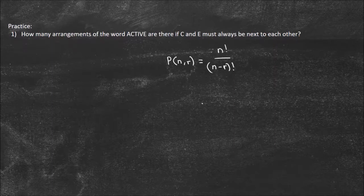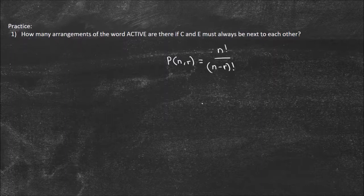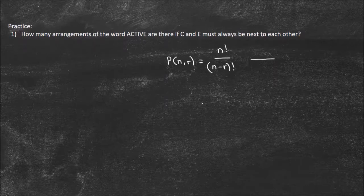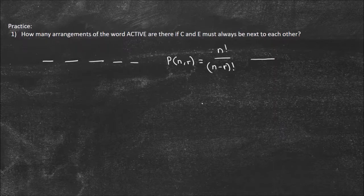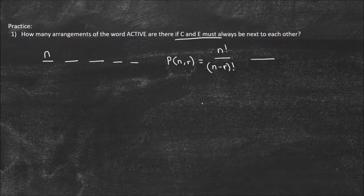The n is how many objects we have, and the r is how many we are choosing. If we're choosing the arrangements of the word ACTIVE, we're going to use all the letters. So r is going to equal n. How many letters do we have? You may be tempted to say six, but there's actually just five. There's five in this situation because C and E must always be together.